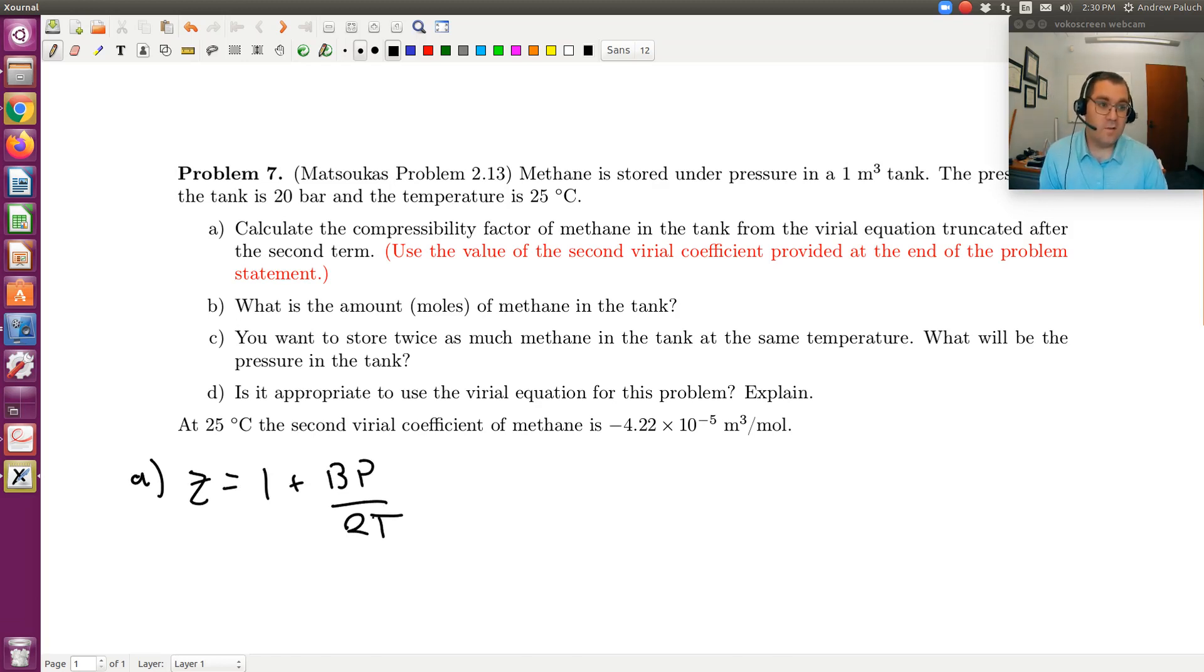Remember the equation of state for real fluids is PV equals ZRT. Ideal gas equation of state is PV equals RT. So this is our virial equation written as an expansion with respect to density. Z is equal to 1 plus BP over RT, truncated after one term. So now we're asked to calculate Z.